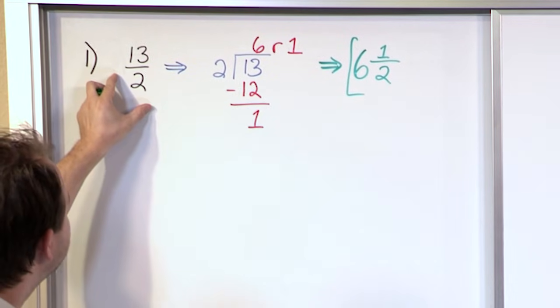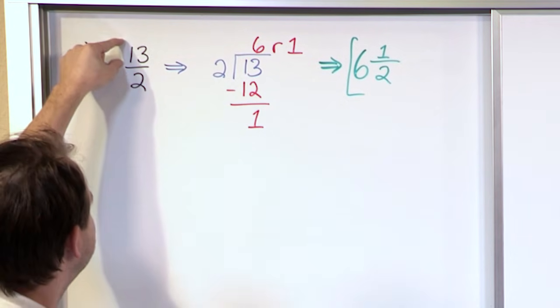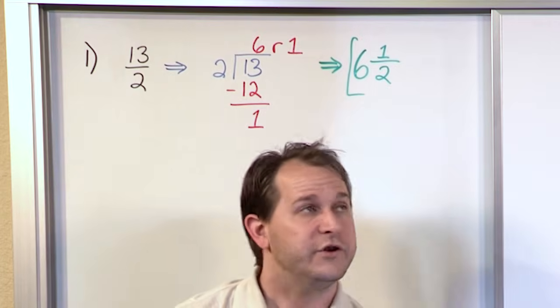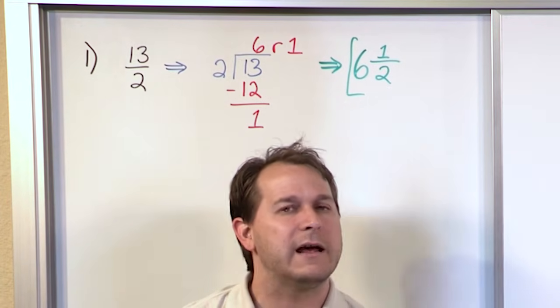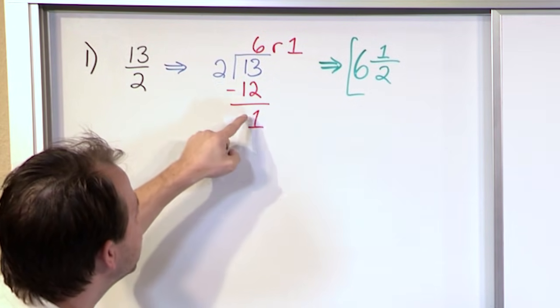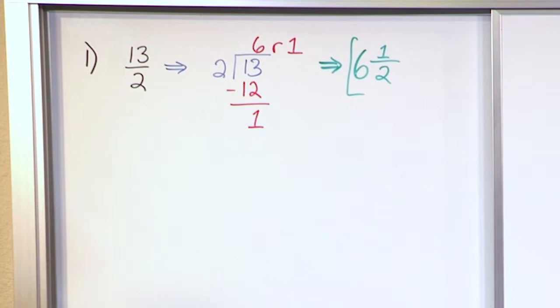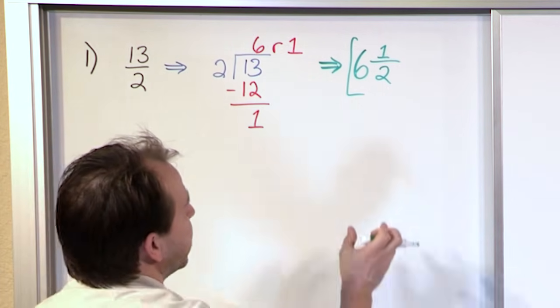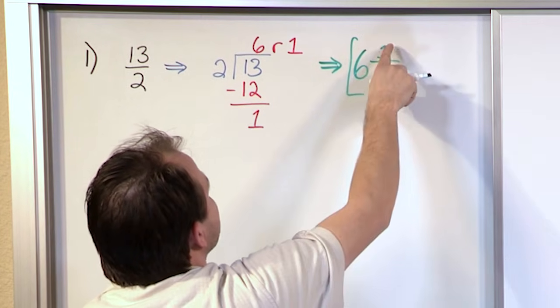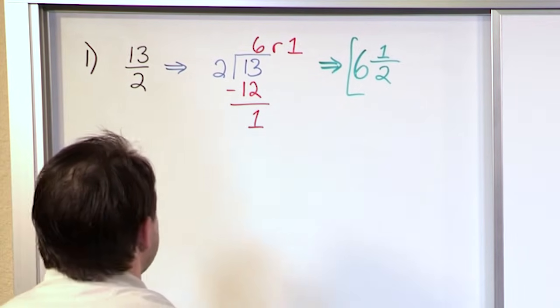The way you write this is to make your mixed fraction: you do the division and the number you get on top is the big number, 6. The remainder goes in the top of the fraction and the original bottom stays the same—6 and a half. That is the answer. You can check your work: 2 times 6 is 12 plus 1 is 13, so it would be 13 halves.